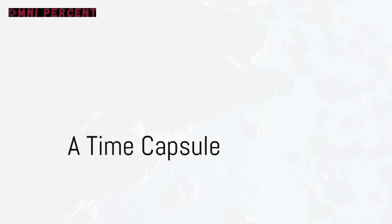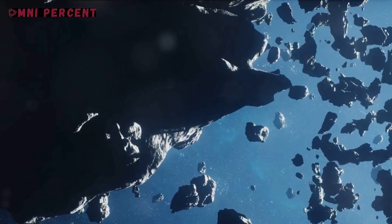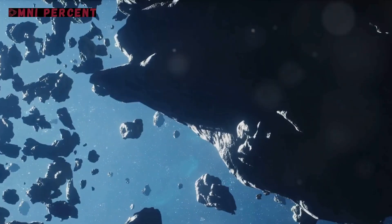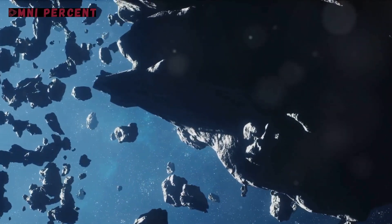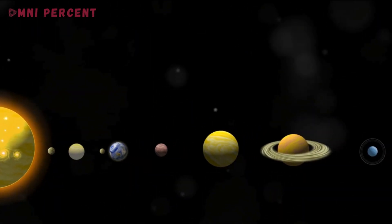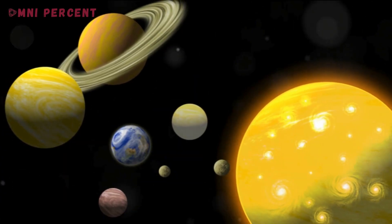But why does Ceres matter so much? For starters, its unique positioning in the asteroid belt offers invaluable insights into the early solar system's formation and evolution. Ceres is a relic from the past, a preserved fragment of the building blocks that shaped our solar system.